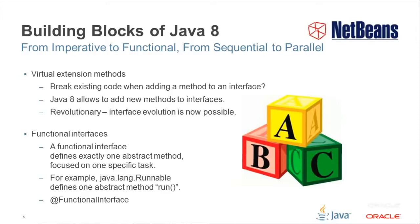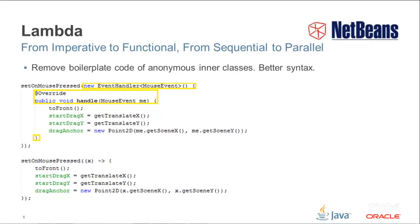Secondly, the notion of functional interfaces has been introduced. These have actually always existed, but have been particularly cumbersome to code in Java. An interface such as Runnable, with a single abstract method — run — should be far simpler to work with than has been the case in Java, and forms the focus of the lambda enhancements in Java 8. A new annotation has been introduced — @FunctionalInterface — which, like the @Override annotation, is used to declare the intention of something to be used in a certain way: the intention of an interface to be functional, and hence exposed to the new lambda syntax.